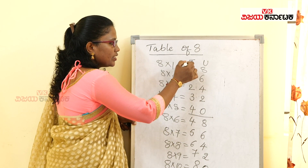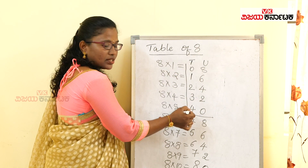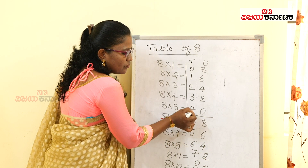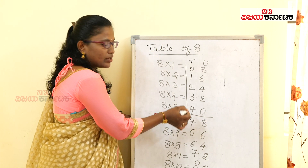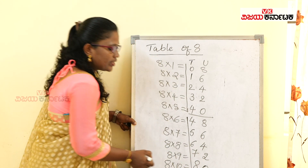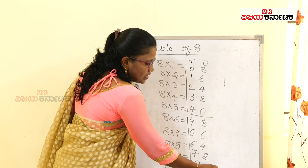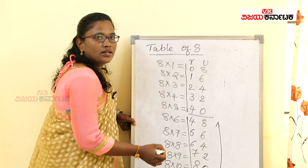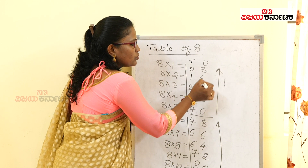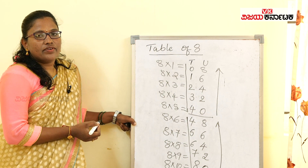First, writing downward in the tens place: 0, 1, 2, 3, 4 — then continue from 4 onwards. That is the important pattern. For the unit place, write 0, 2, 4, 6, 8 and then repeat 0, 2, 4, 6, 8. This is how we remember the table of 8.